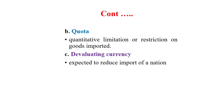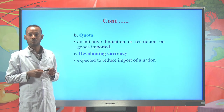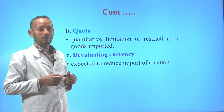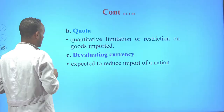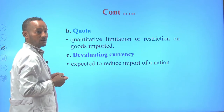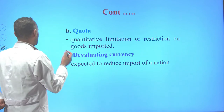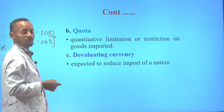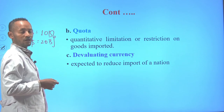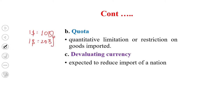Quota is a quantitative limitation or restriction on goods imported or exported. The third restriction of international trade is currency devaluation. Currency devaluation is an administrative reduction in the price or worth of a nation's currency in terms of another nation's currency. For instance, if one USD was once converted for 10 ETB, and now one USD is converted for 20 ETB, in terms of USD the ETB is devalued — it is losing its value.